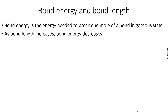Bond length is the distance between the bonded pair of electrons and the nucleus of the atom. The longer the distance, the lower the force of attraction between the nucleus and the bonded pair of electrons, and therefore the lower the bond energy. As bond length increases, bond energy decreases.